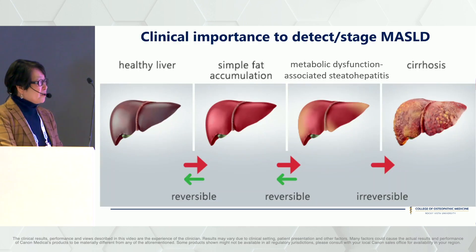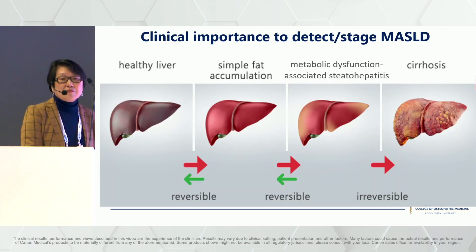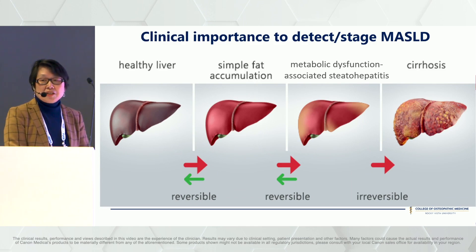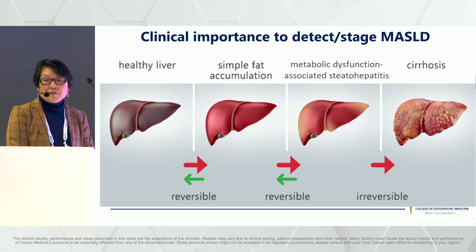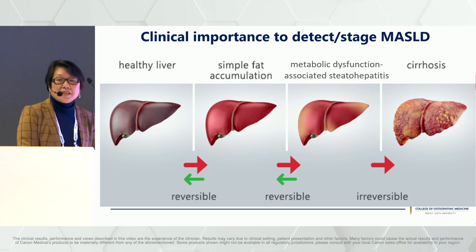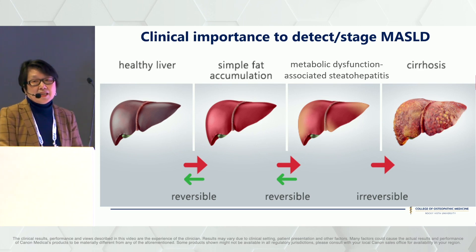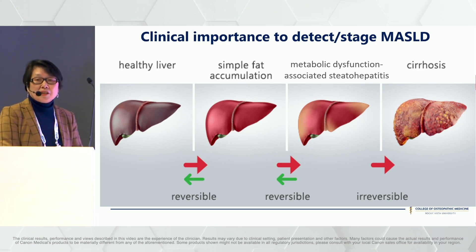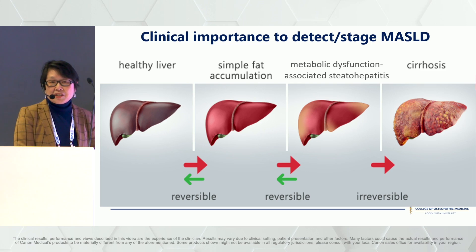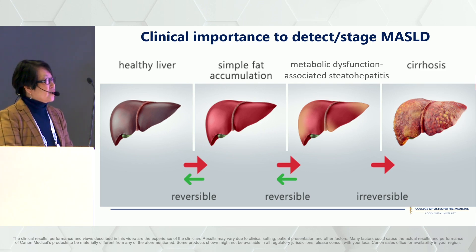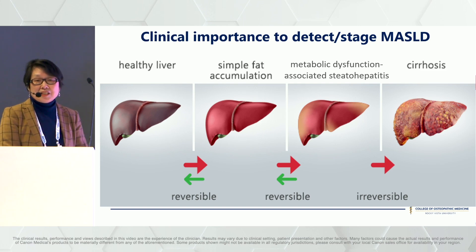It is very important to detect the early stages of MASLD because pathological changes like fatty accumulation and inflammation in the liver in the early stages can be reversed with proper treatment or management. However, once the disease progresses to later stages and fibrosis develops, there is a high risk of development of liver dysfunction, even HCC. That's why it's very important to detect early stages and provide the patient with proper treatment.